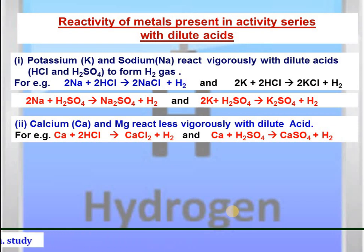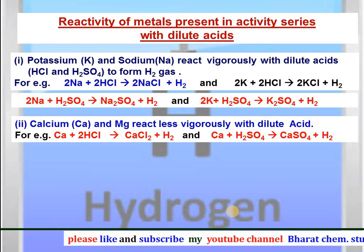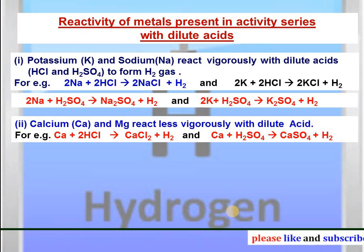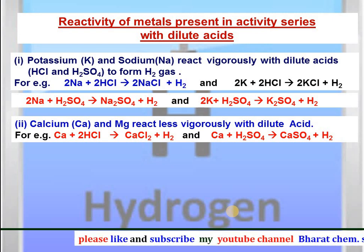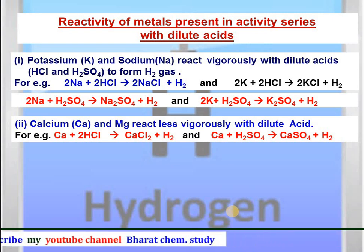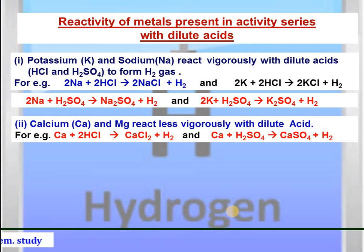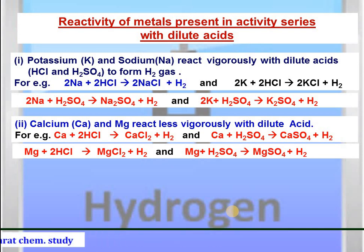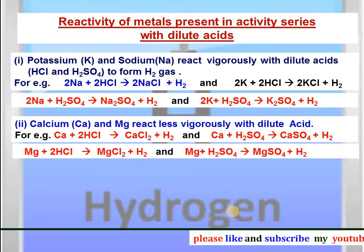Second point: calcium and magnesium react less vigorously with dilute acids. Calcium reacts with HCl to give calcium chloride and hydrogen gas, or with dilute H2SO4 to give calcium sulfate and hydrogen gas. Similarly, magnesium reacts with dilute HCl to give magnesium chloride and hydrogen gas, and with dilute H2SO4 to give magnesium sulfate and hydrogen gas.